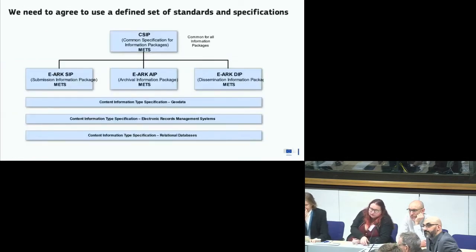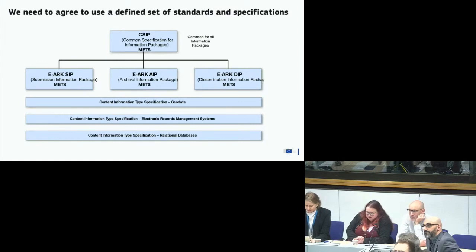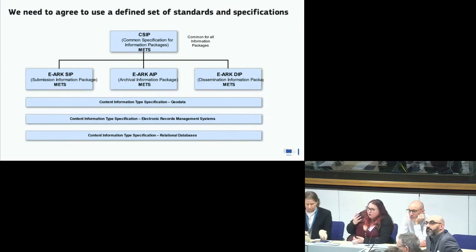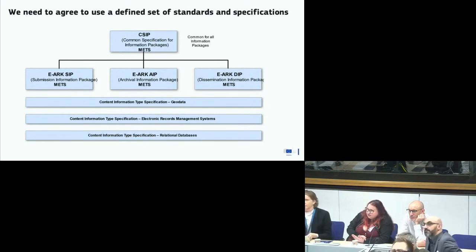With all these standards, what we need is to have a defined set of standards and specifications that we use together, so we limit the numbers and know what we are using. In the building block, we have these specifications today. You have heard about the CSIP. We have a set of seven specifications right now that we have agreed upon and are using in the building block.